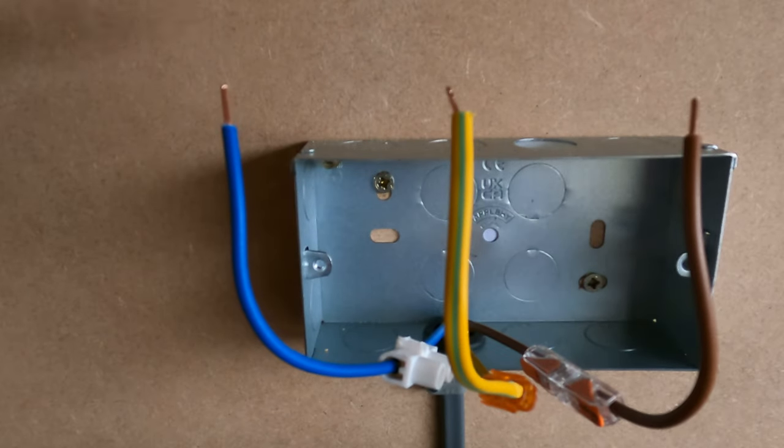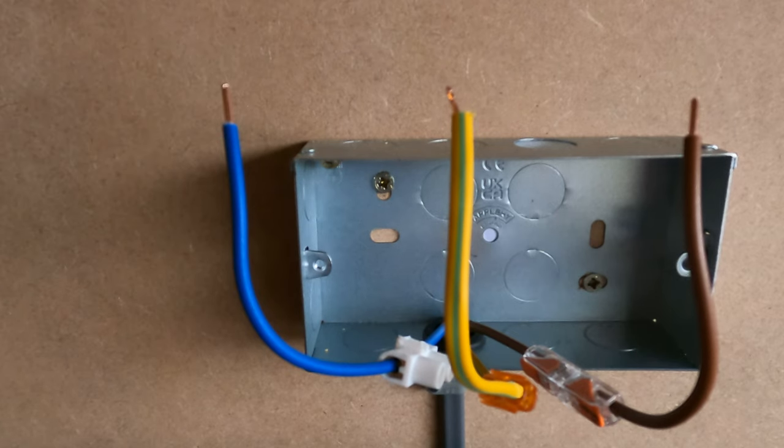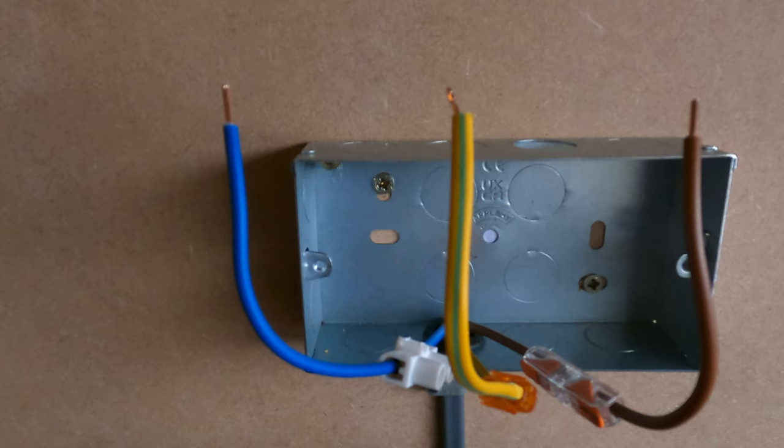So there's three different methods for extending out your cables. My preferred method is the Wago inline connector, but all three of these methods are perfectly fine to use. Now another method you could use is crimping the cable, so I'll show you how to do that now.